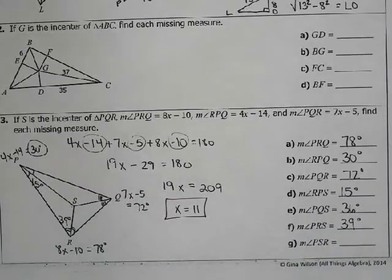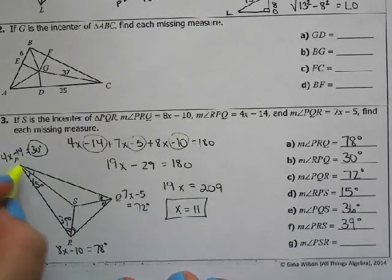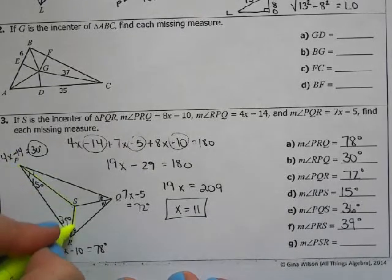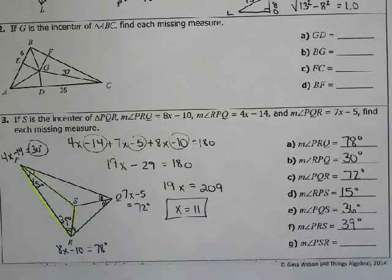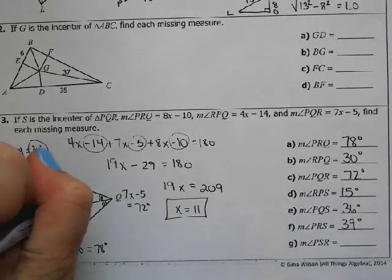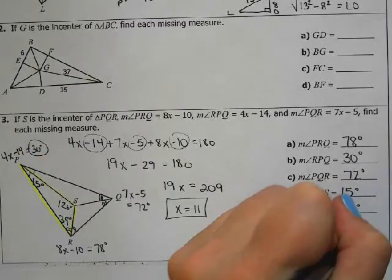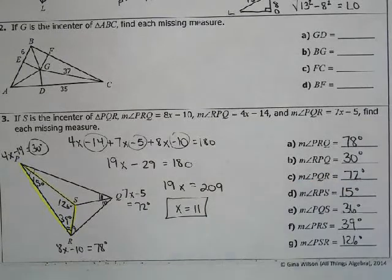So 180 minus 54, and we get 126 degrees. So there's a little bit to do with these kind of problems. So you have to remember our angle relationships, the sum of the angles in a triangle. To bisect means to split in half. So complete the rest of this worksheet.